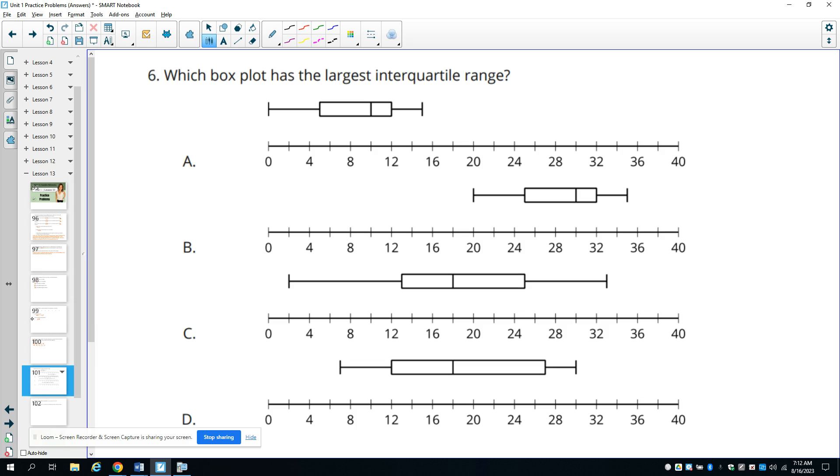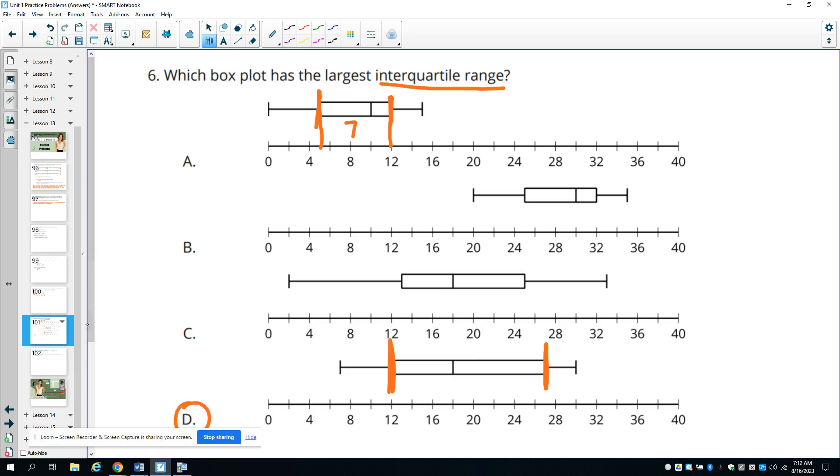Number six, which plot has the largest interquartile range? And remember, the interquartile range is the difference between Q1 and Q3. So really what this is asking for is what has the widest box or the widest middle part. And you could certainly subtract these. You could look and see that this one's at 12 and this one's at 5. And you could subtract those to get 7. But we're looking for the widest distance. And you can pretty easily tell that the widest distance here is D. So this is the widest distance. Again, subtract them all if you want to figure out the actual interquartile range and compare them.